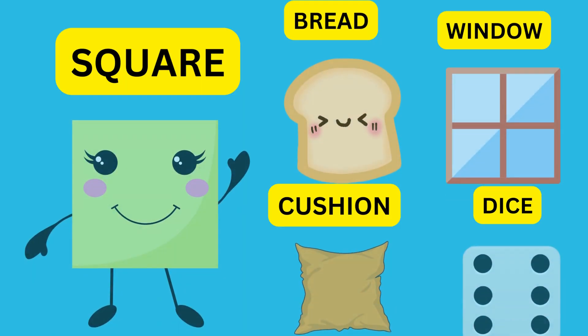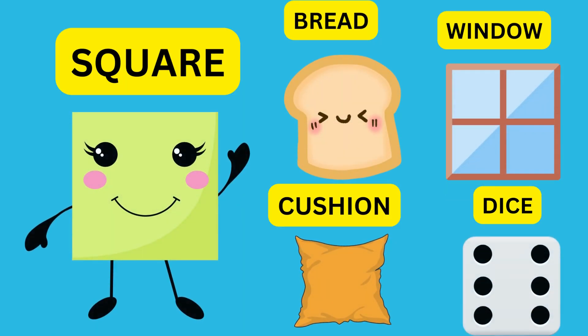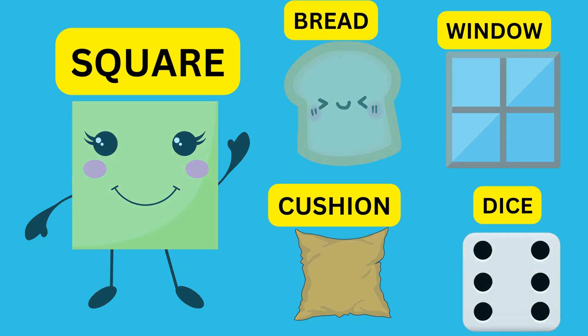Square. Bread — square. Window — square. Keys — square. Cushion — square.